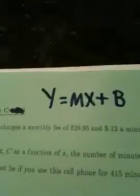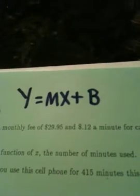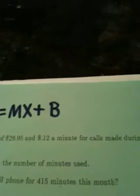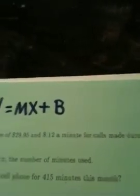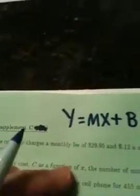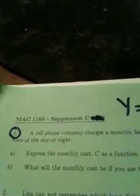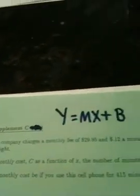Question number one: A cell phone company charges a monthly fee of $29.95 and $0.12 per minute for calls during any time of the day or night. We are supposed to express the monthly cost C as a function of X, where X is the number of minutes used. And then, for part B, we are supposed to say what the monthly cost would be if we used the cell phone for 415 minutes.